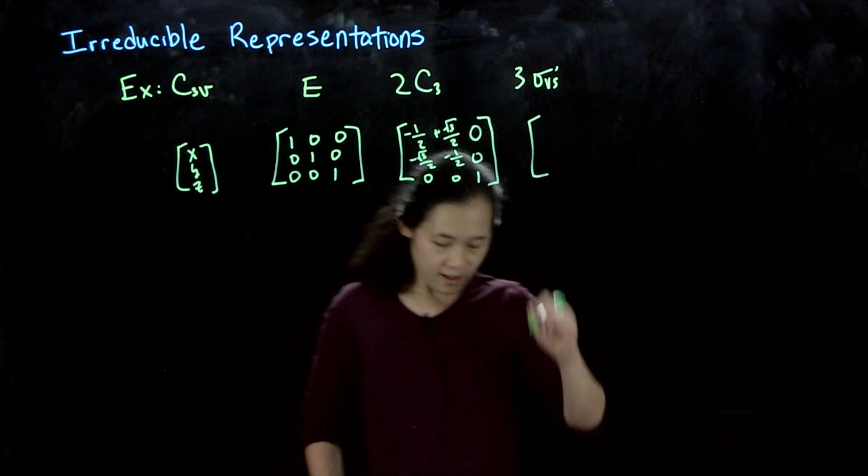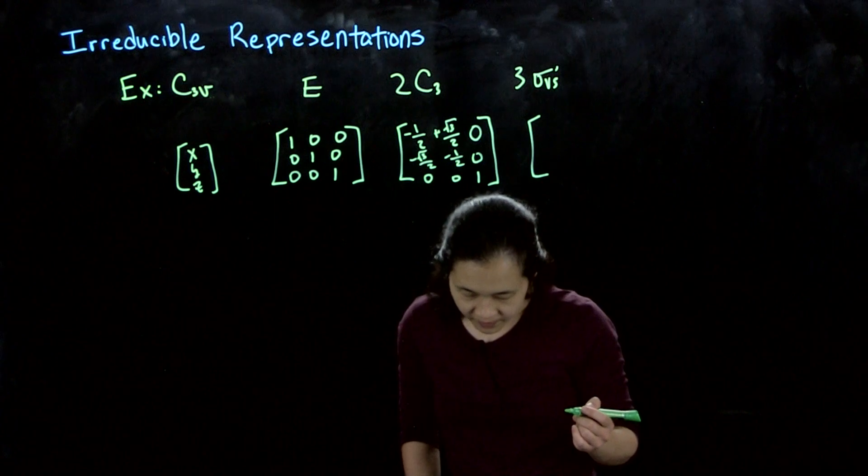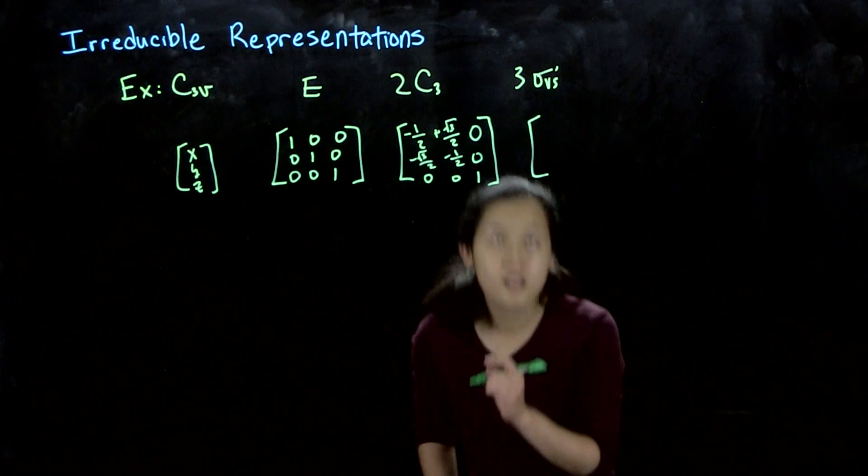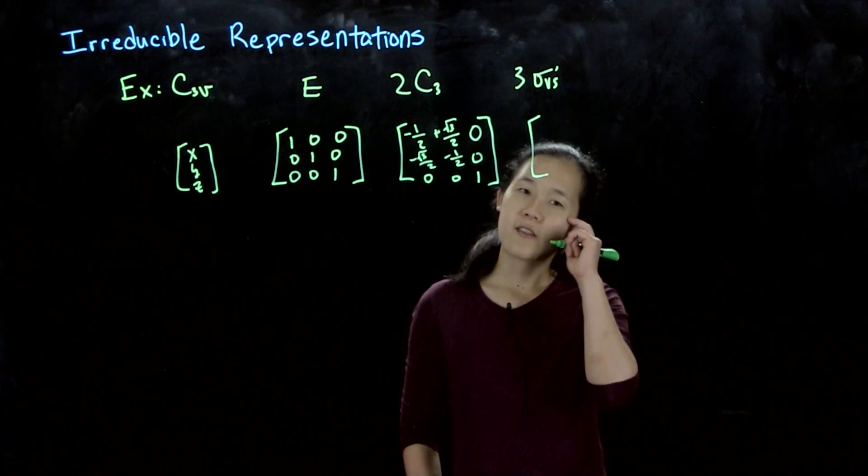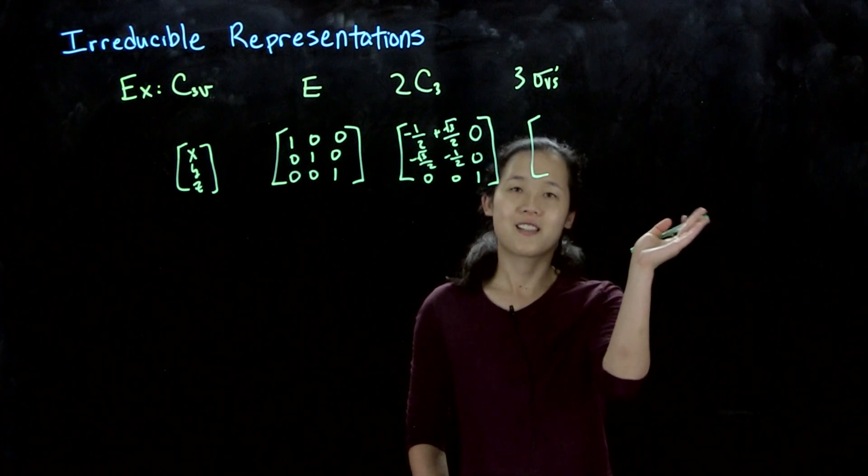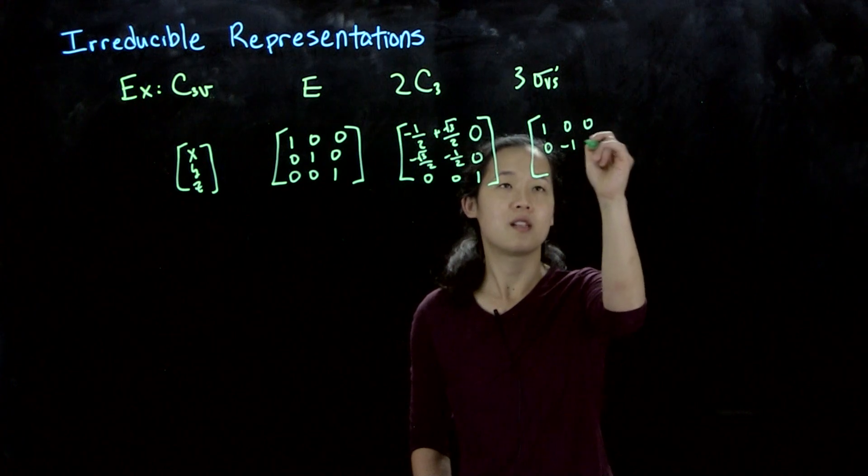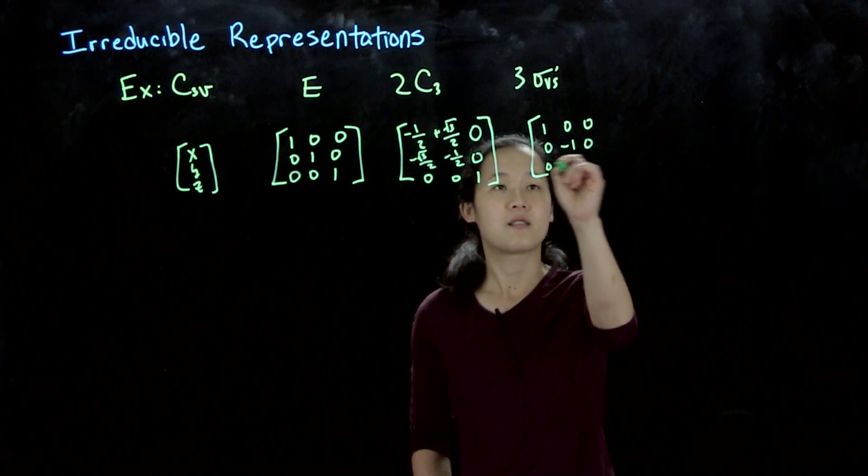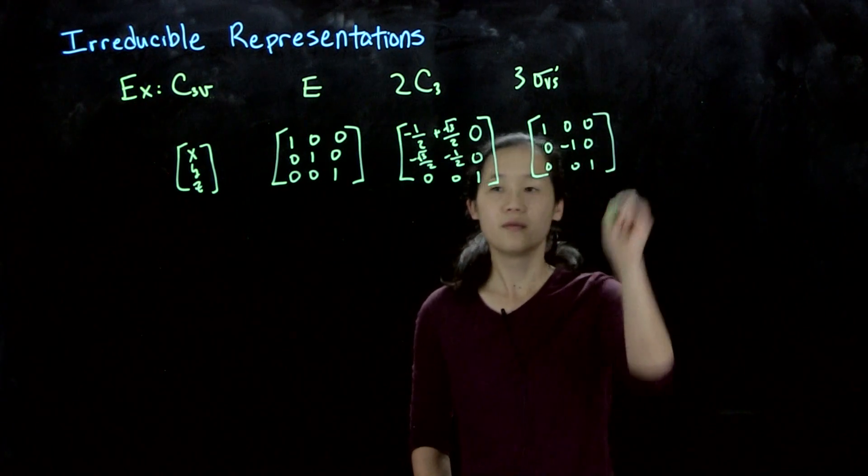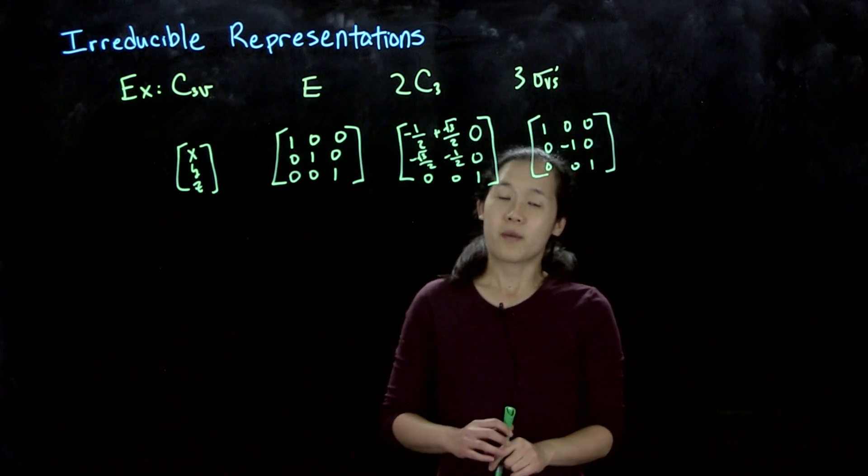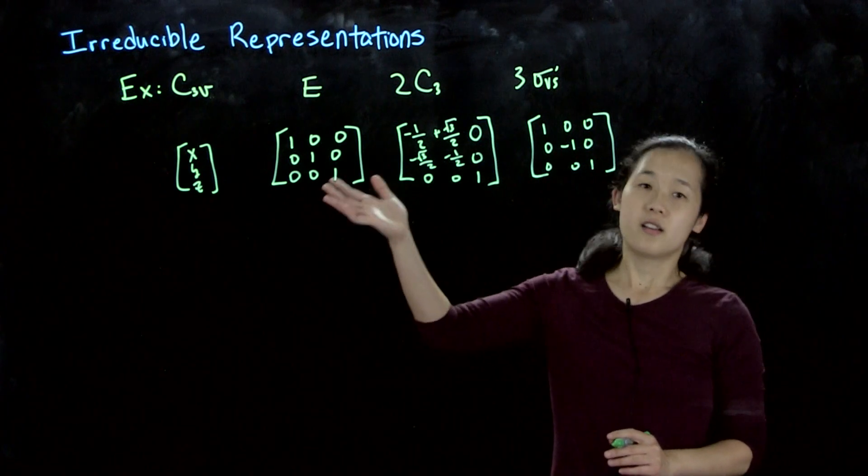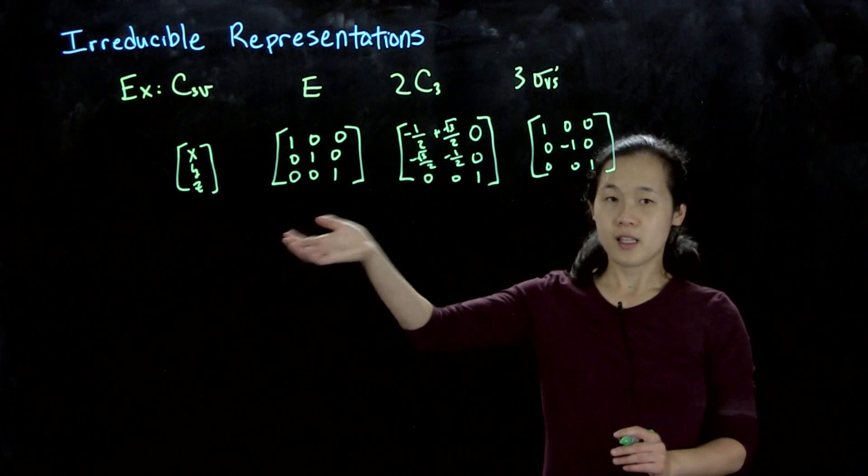And then one of the sigma Vs—I'm only going to show one of them again—let's pick the easiest one, which is the one along the X axis. So that's going to be 1, 0, 0; 0, minus 1, 0; and 0, 0, 1.